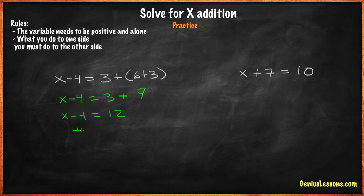Now we need to add both sides to 4. Why 4? Because on the left side, we have negative 4, and if we add 4, we will end up with x alone on the left side. x equals 16.